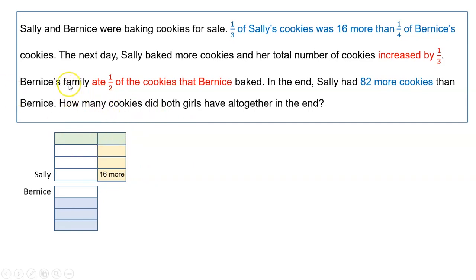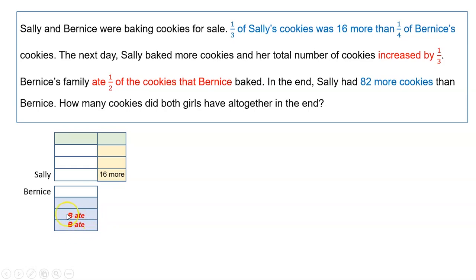And since Bernice's family ate half of what she had baked earlier, there are four units here, so two units will be eaten. It is hard to cancel, so I'll write the notes and keywords in the model itself.